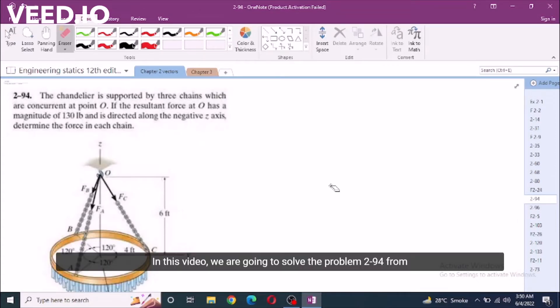In this video, we are going to solve problem 2-94 from RC Hibbeler Engineering Statics 12th edition. According to this problem, the chandelier is supported by three chains which are concurrent at point O. If the resultant force at O has a magnitude of 130 lb and is directed along the negative z-axis, determine the force in each chain.